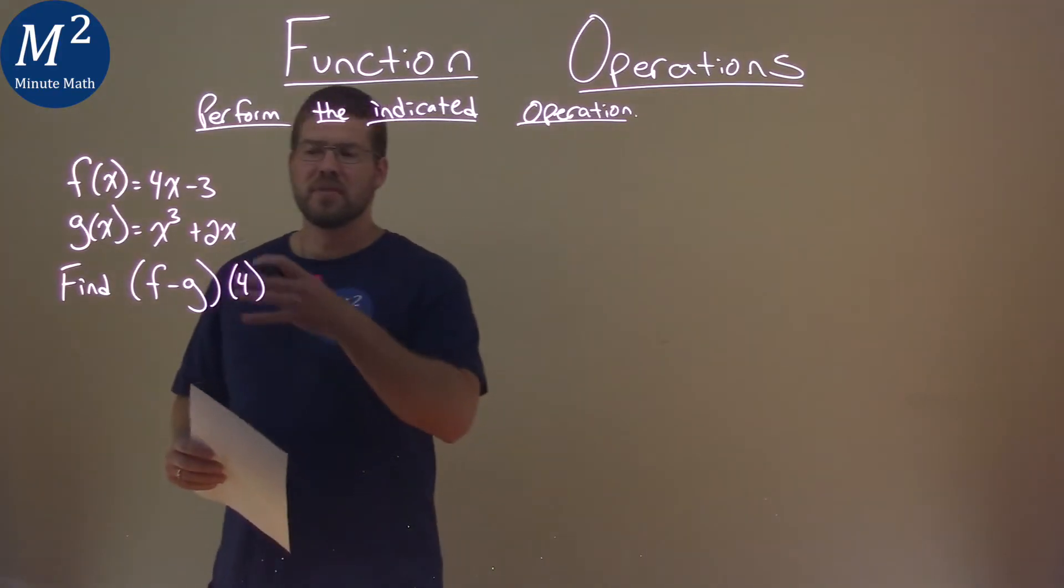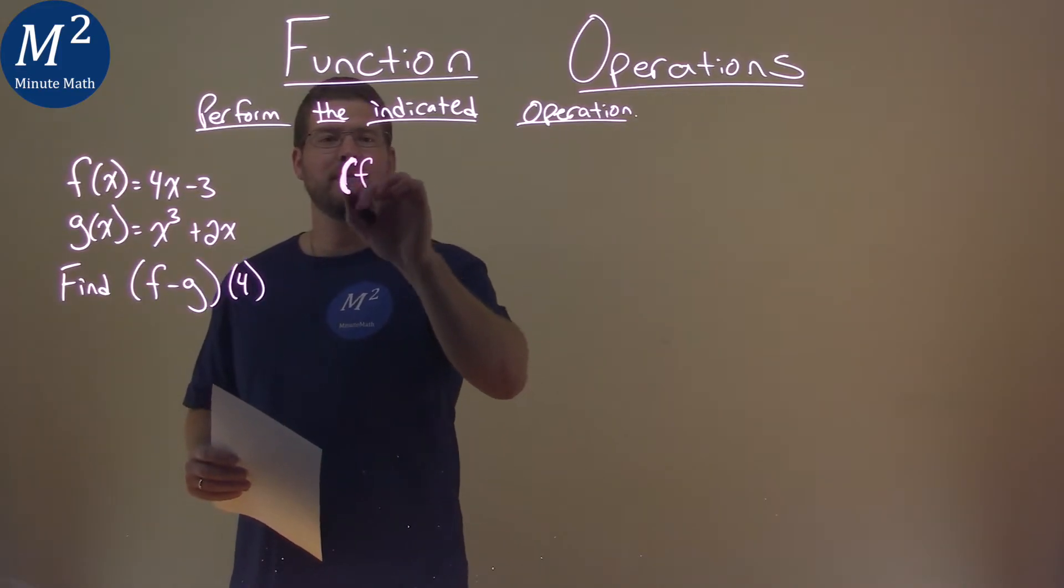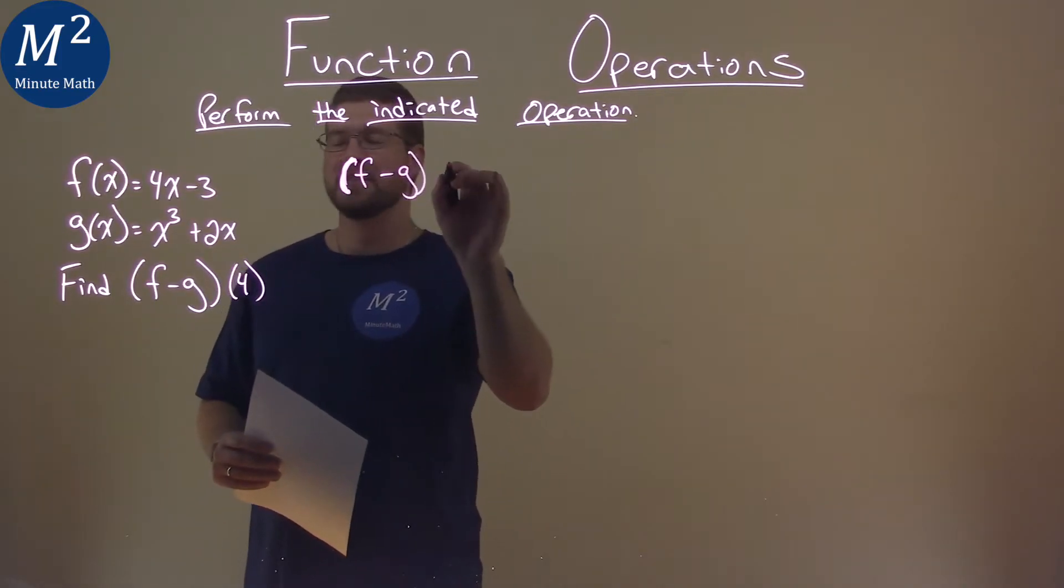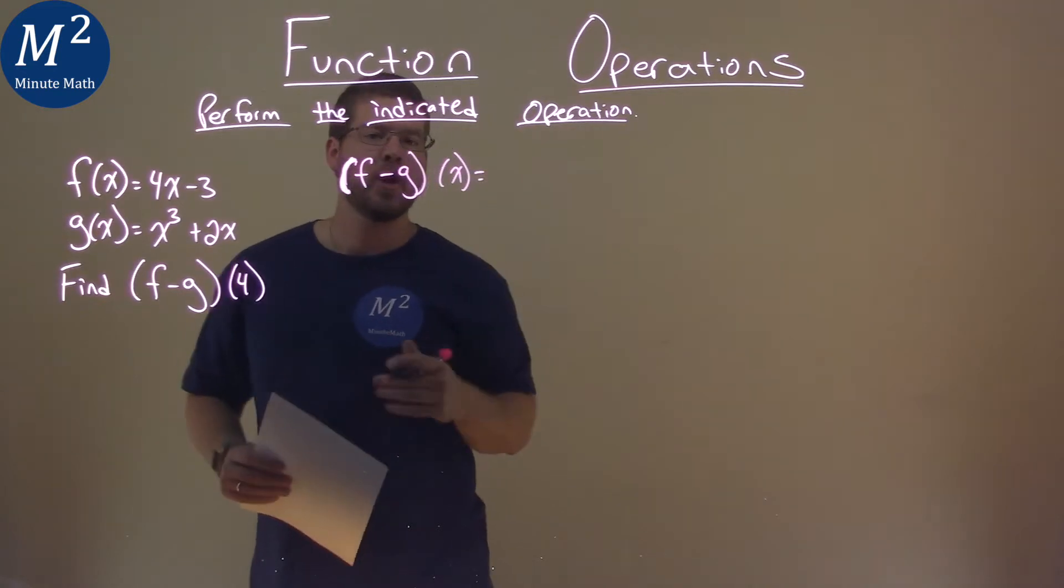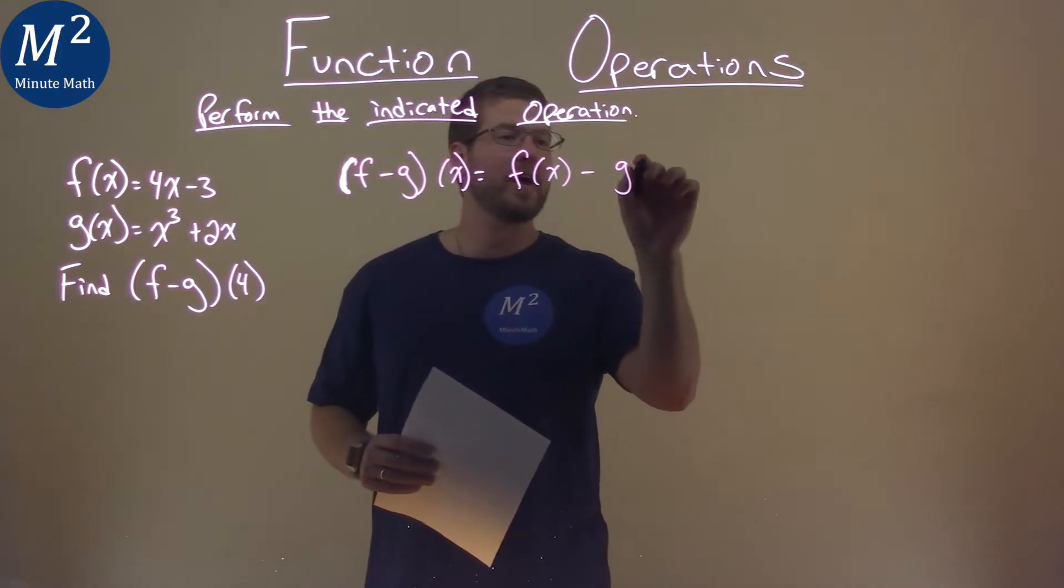The first thing I want to do is set up (f - g) of x. What that's going to be is f(x) minus g(x).